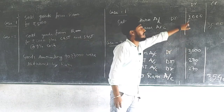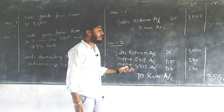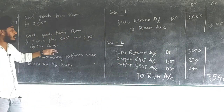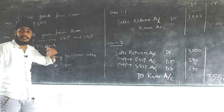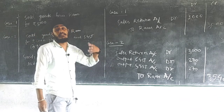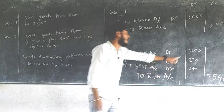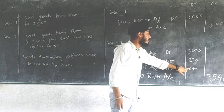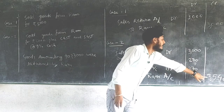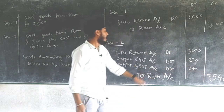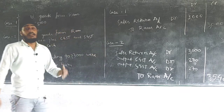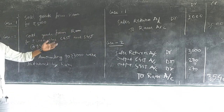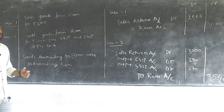Sales Return is entered as 3000. GST is calculated at 9% each: CGST = 9% of 3000 = 270, SGST = 9% of 3000 = 270. Total on Ram Account = 3000 + 270 + 270 = 3540. This is how the journal entry for sales return with GST is passed.